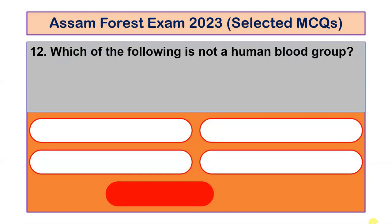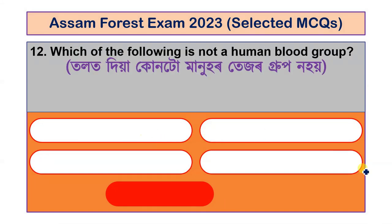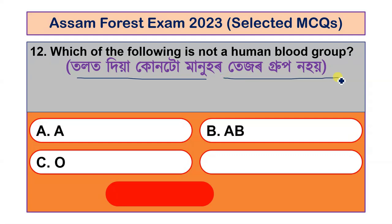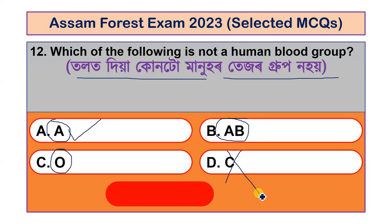Question number 12: Which of the following is not a human blood group? Options given are A, B, O, AB and C. Blood groups A, O and AB are valid, but C is not a human blood group. So the correct answer is option C.